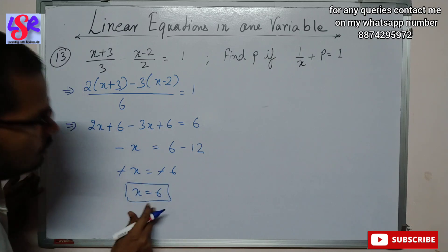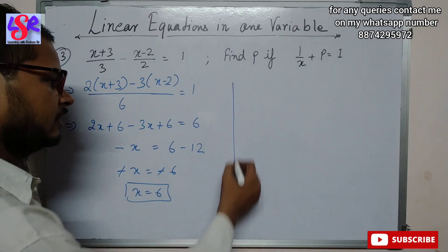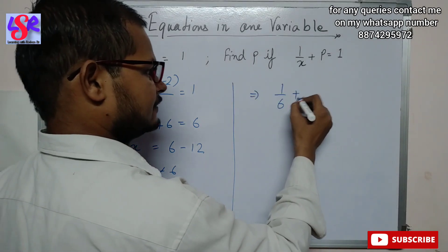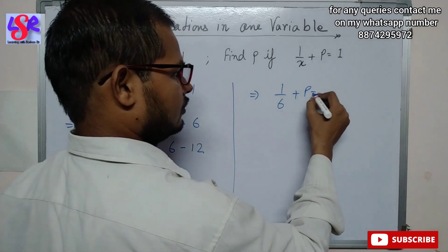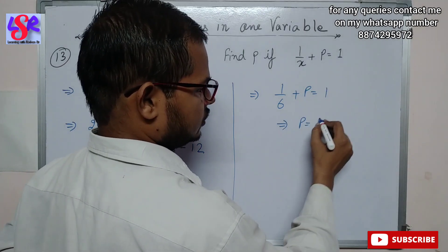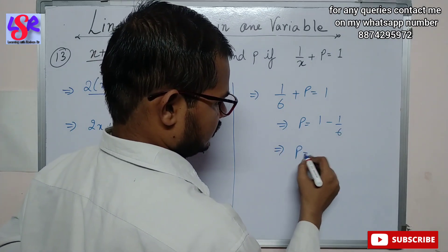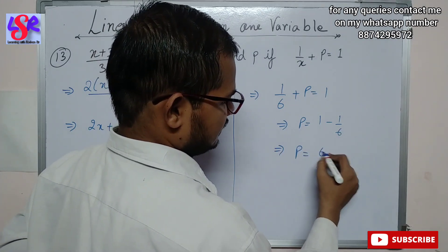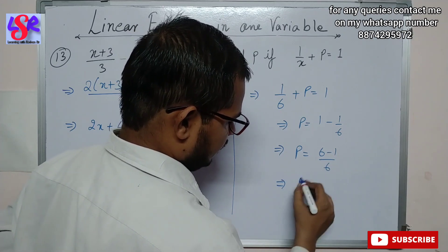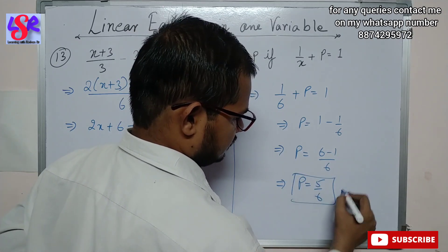Now substituting x = 6 into 1/(x + p) = 1: we get 1/(6 + p) = 1, which implies p = 1 - 1/6 = (6 - 1)/6 = 5/6 as the answer.